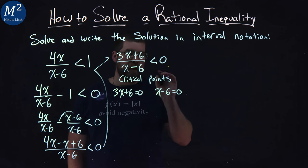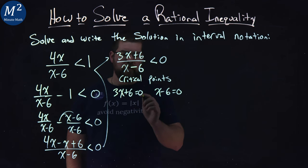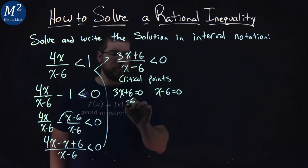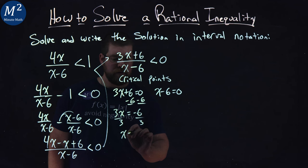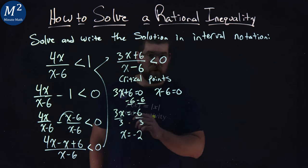The denominator is where it's undefined. Good to note. From there, we solve: subtract 6 from both sides, and we have 3x equals negative 6, divided by 3, x equals negative 2. That's one critical point.